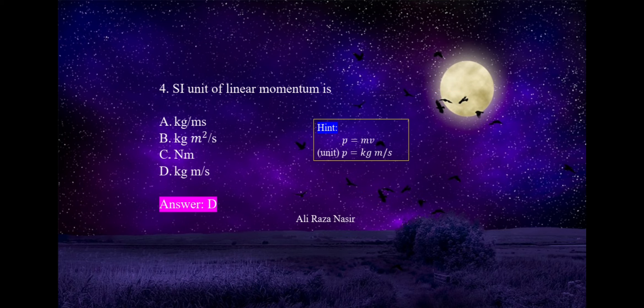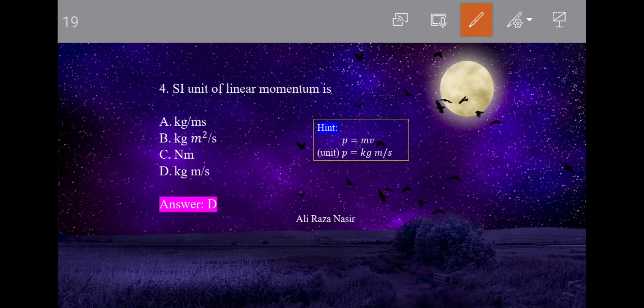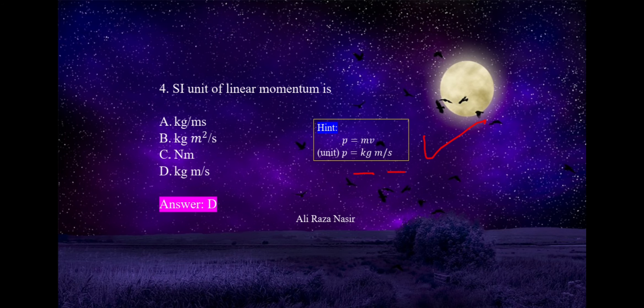Next one: the unit of linear momentum is — option A: kg per m/s, option B: kg·m²/s, option C: Newton·meter, option D: kg·m/s. We know the expression P = mv. Unit of mass is kg, unit of velocity is m/s. So option D is correct: kg·m/s.